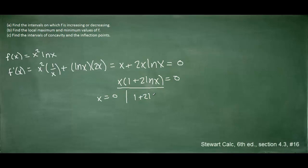Let's solve the second equation by subtracting 1 and then dividing by 2, leaving us with the natural log of x equals negative 1 half. The base of the natural log is e, so to convert this logarithmic form into exponential form, we raise the base to the other side of the equation. So x equals e raised to the negative 1 half. This is our first critical number.